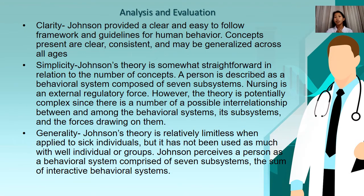Analysis and Evaluation. Clarity: Johnson provided a clear and easy-to-follow framework and guidelines for human behavior; concepts presented are clear, consistent, and may be generalized across all ages. Simplicity: Johnson's theory is somewhat straightforward in relation to the number of concepts — a person is described as a behavioral system composed of seven subsystems, and nursing is an external regulatory force. However, the theory is potentially complex given the number of possible interrelationships between and among the behavioral systems, its subsystems, and the forces acting on them.